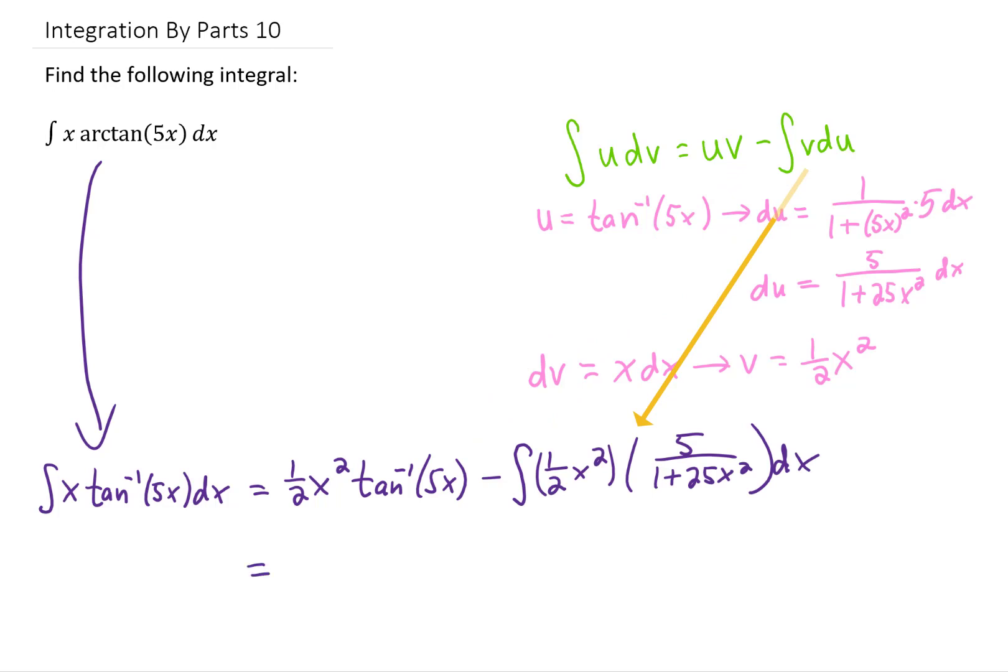We can pull the constants out of that integral, and I'll rewrite this as a single fraction. Now what we're left with is an integral of a rational function, and the degree of the numerator is greater than or equal to the degree of the denominator.